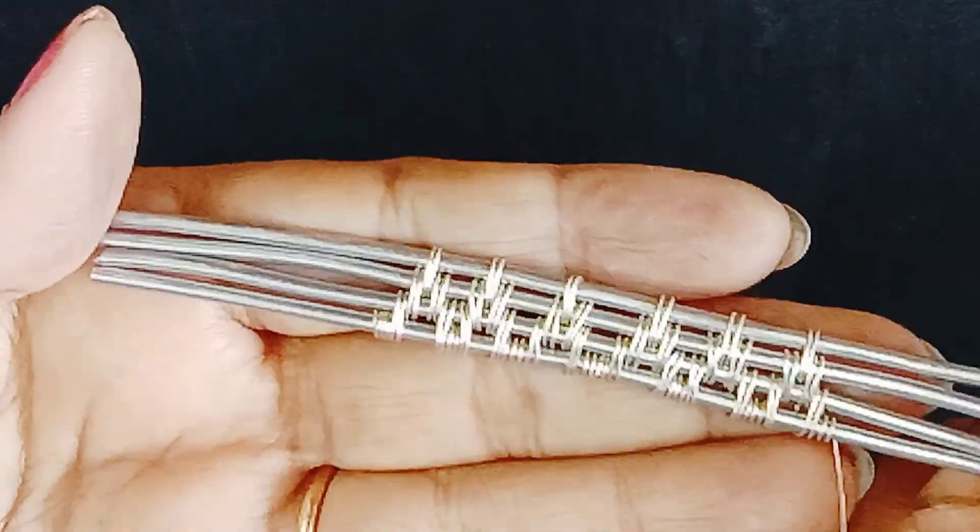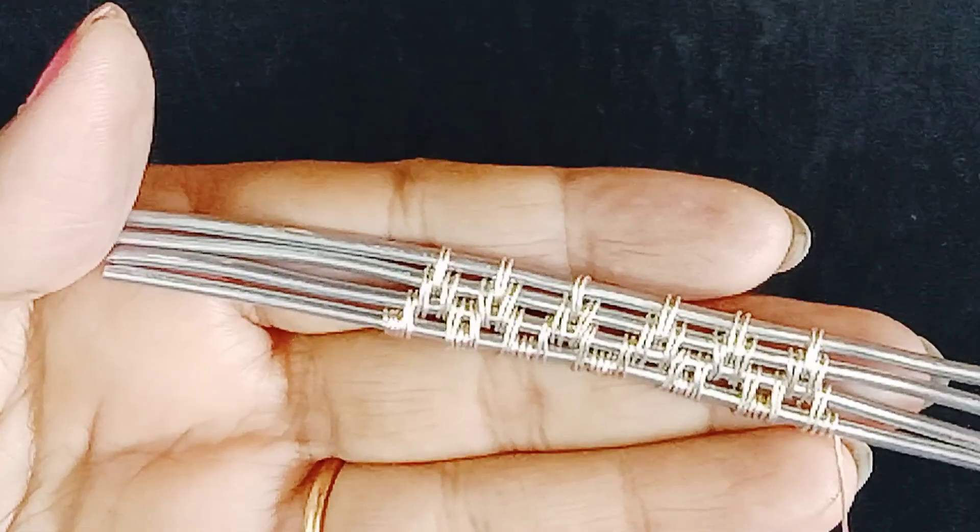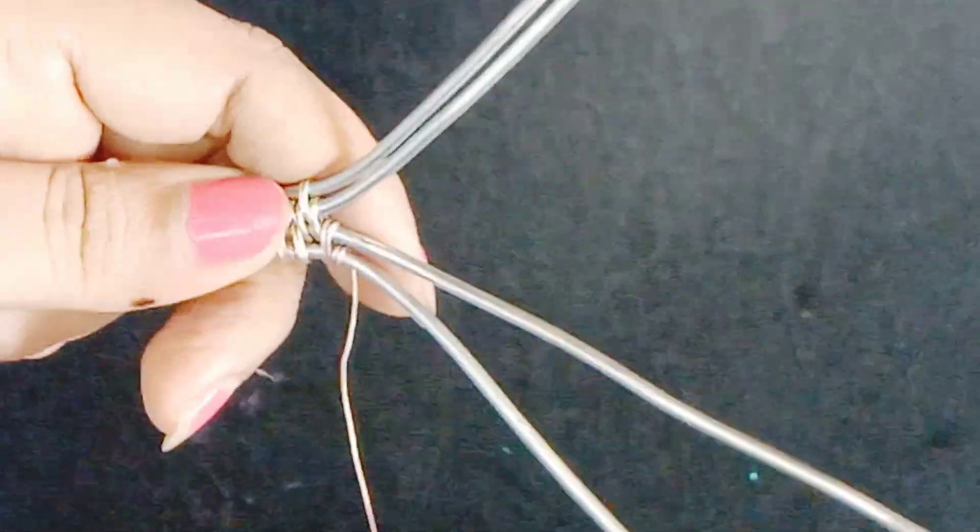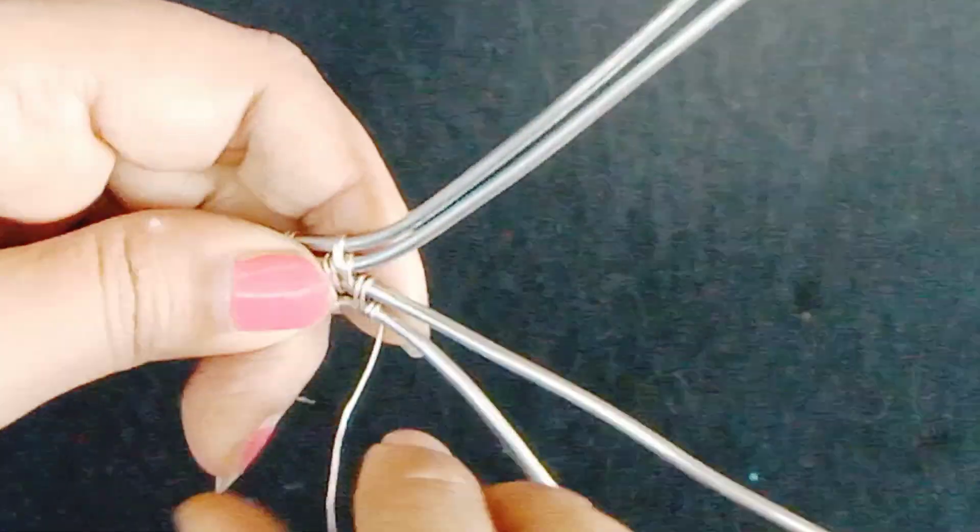After making these 6 temples, I am going to divide the wires. Each part has 2 wires and now I am wrapping these 2 wires only.